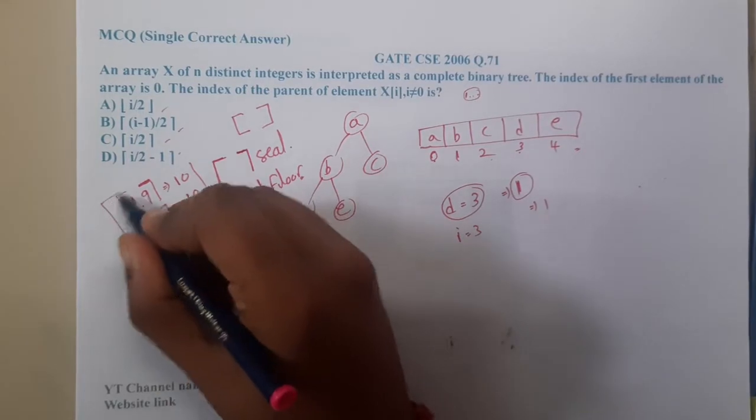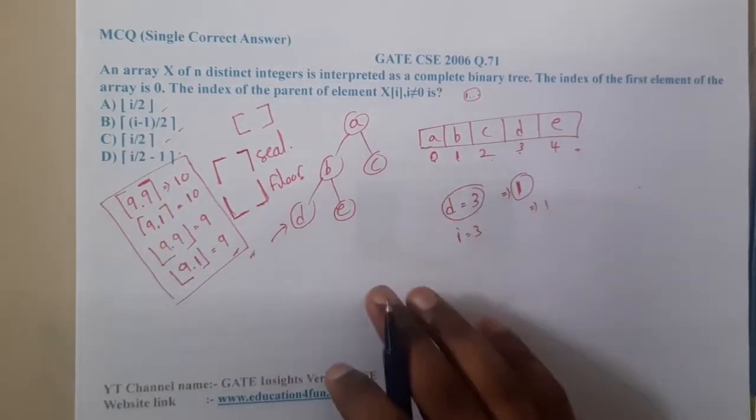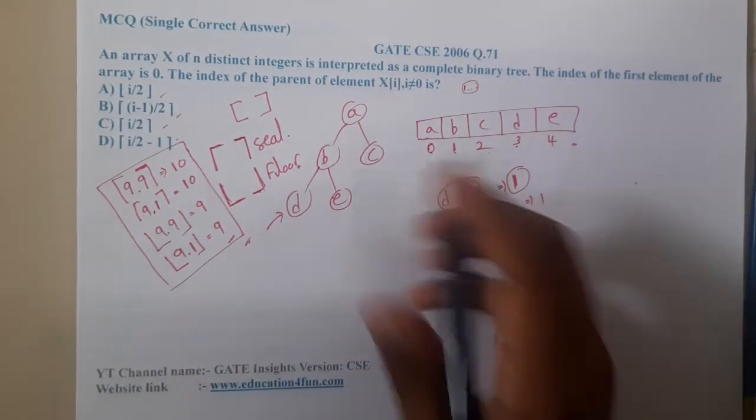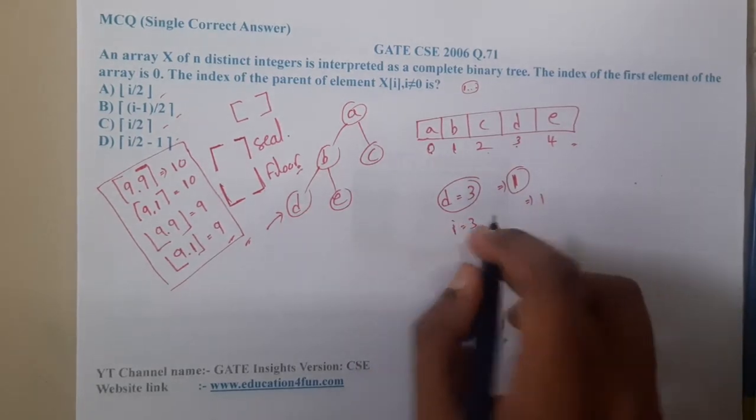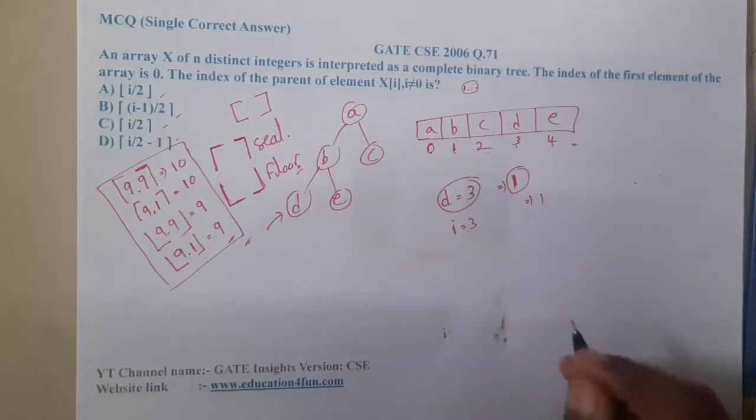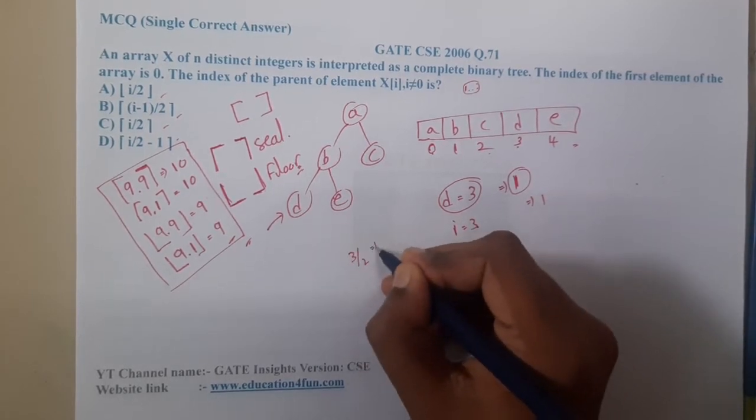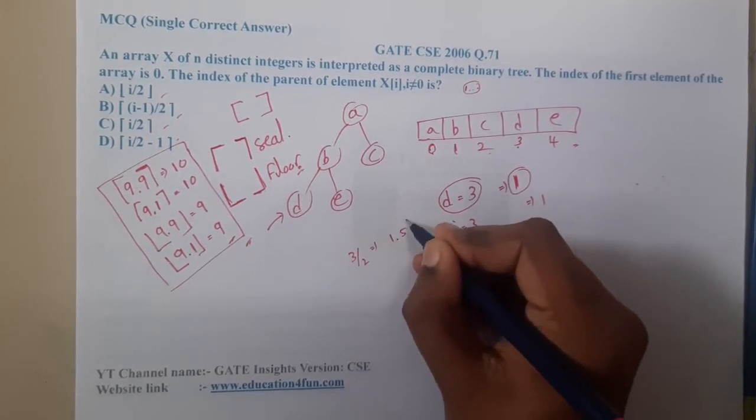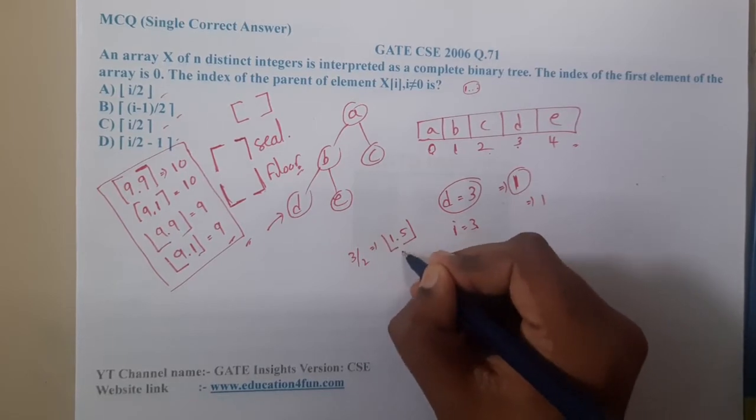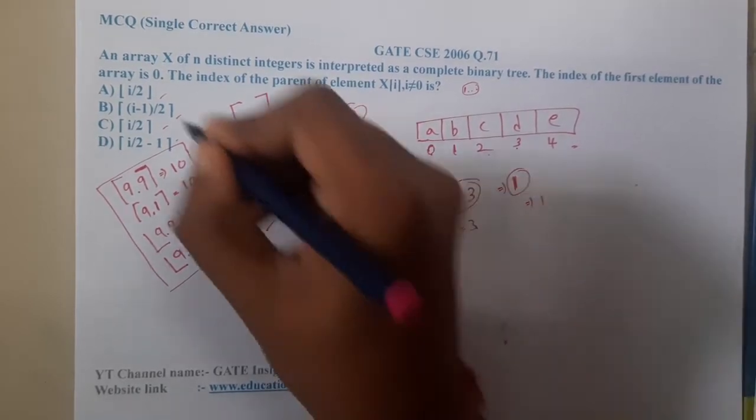This is the concept which you should have an idea before solving this question. This is a prerequisite. So now you are clear with ceil and floor values. Let us substitute our values into the question. 3 by 2 - what is the value? It is 1.5. And what is the lower bound, that is floor value? It is 1. So option 1 is still in the race.